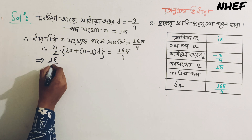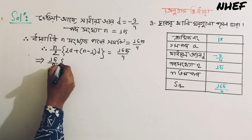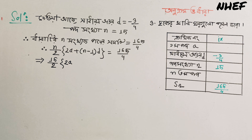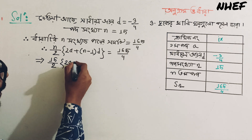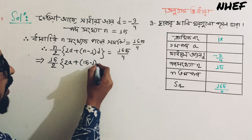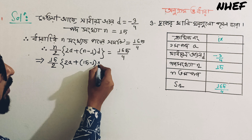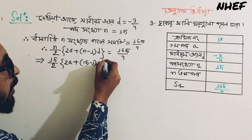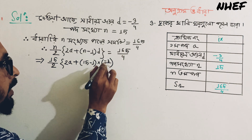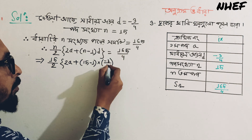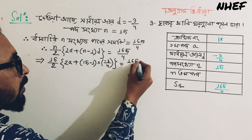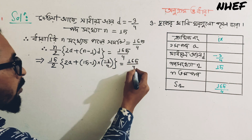15 divided by 2, in the second bracket, twice a. We apply the formula with n equal to 15: 15 minus 1, and d equal to minus 3 divided by 4, minus 3 divided by 4. Second bracket.